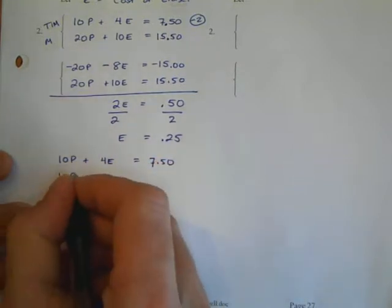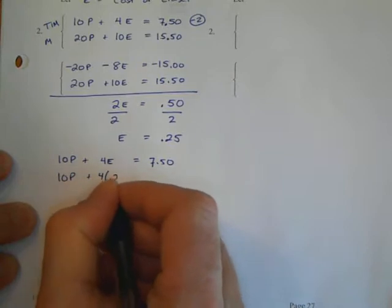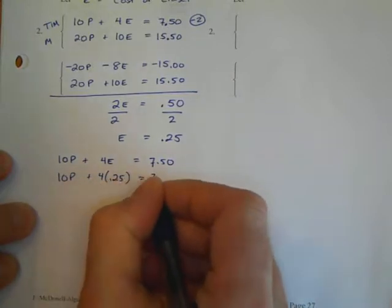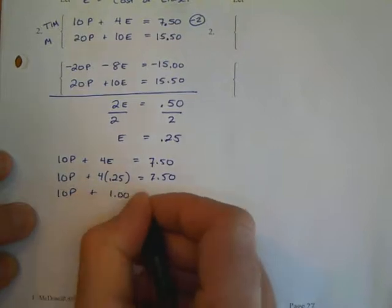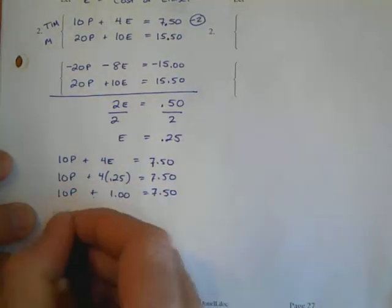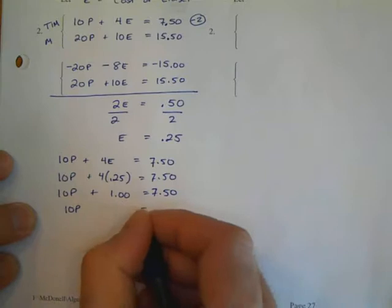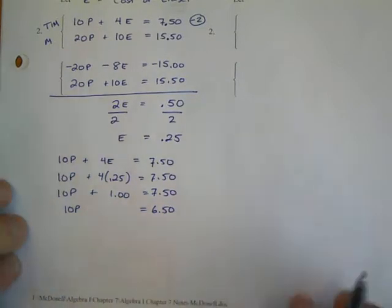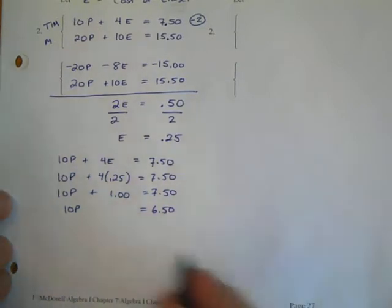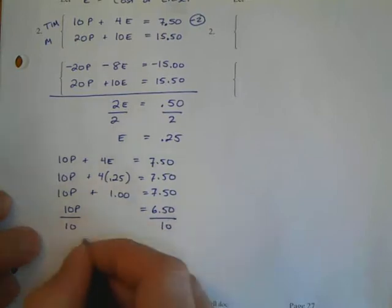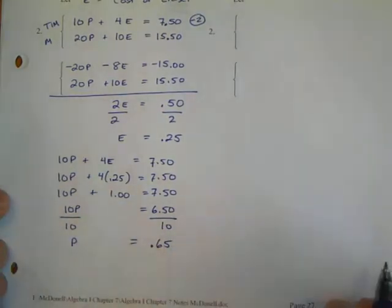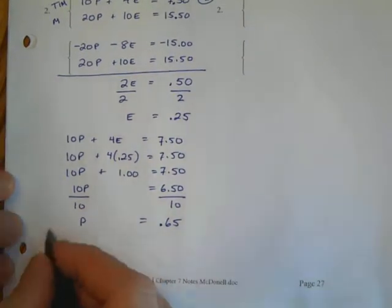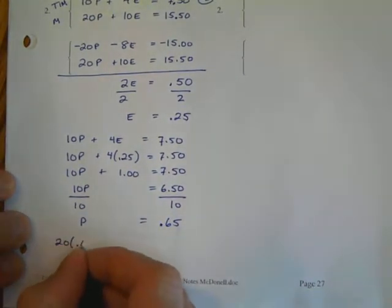So I'm going to use the top equation: 10P + 4E = 7.50. I'm going to replace the value of E with 25 cents. Multiplying 4 times 25 cents is $1. I subtract $1 from both sides and that gives me 6.50. To solve this, I'm going to divide both sides by 10. So that looks like a pen costs 65 cents.